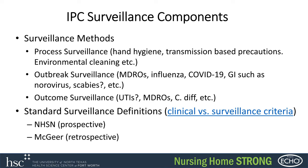In terms of surveillance methods, process surveillance means keeping track of hand hygiene, transmission-based precautions, and environmental cleaning. Those are usually the big ones to monitor, because ultimately those are the processes that are going to have an effect on the outcomes — healthcare-associated infections and infections in the facility.